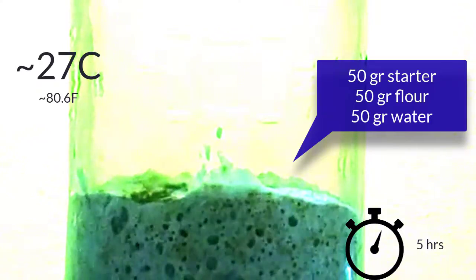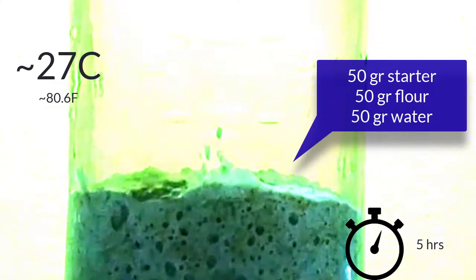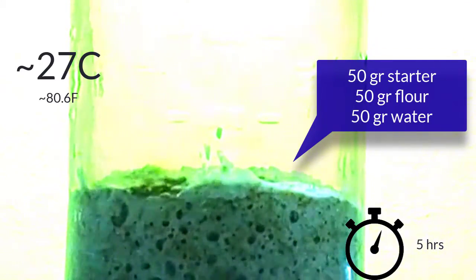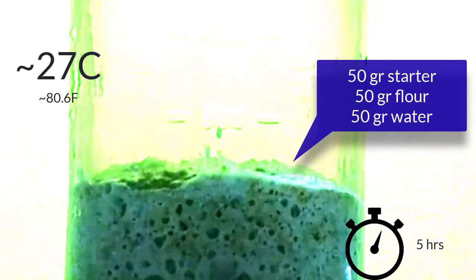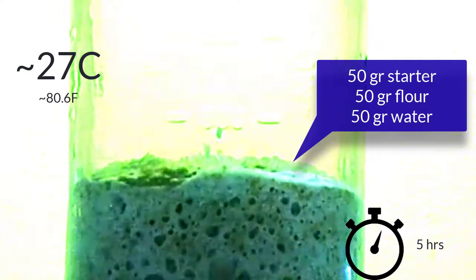On Thursdays I take the glass out of the fridge and start feeding it twice a day. I add 50 grams of flour and 50 grams of non-chlorinated water to 50 grams of starter.